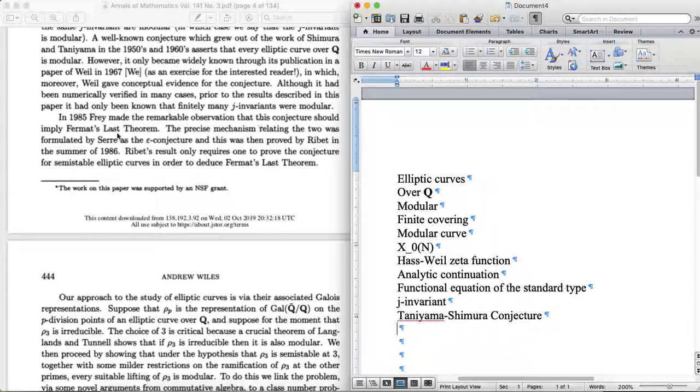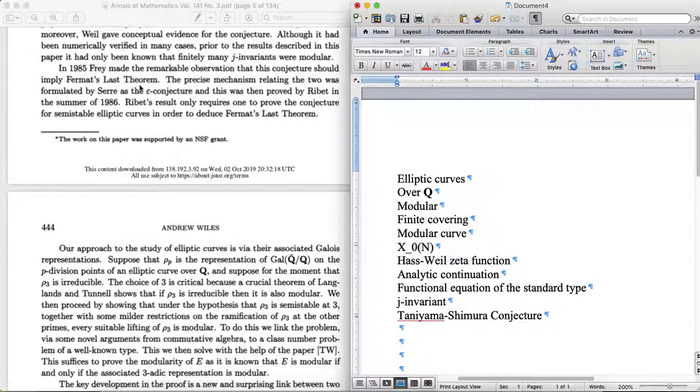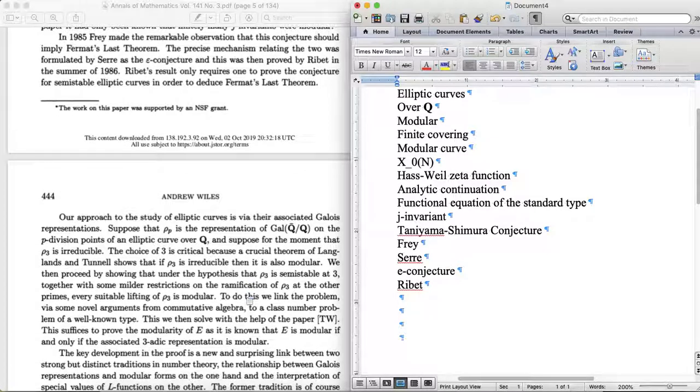So here it is. In 1985 Frey made the remarkable observation that this conjecture should imply Fermat's last theorem. The precise mechanism relating the two was formulated by Serre as the epsilon conjecture, and this was proven by Ken Ribet in 1986. Ribet's result only requires one to prove the conjecture for semi-stable elliptic curves in order to deduce Fermat's last theorem. So that's interesting. Wiles here doesn't prove this for the conjecture for all elliptic curves, only the semi-stable ones. I have no idea what semi-stable means, but it's only the semi-stable ones that are required for Fermat's last theorem.